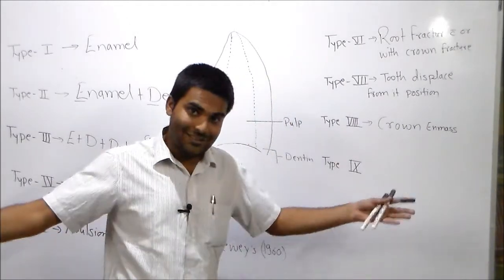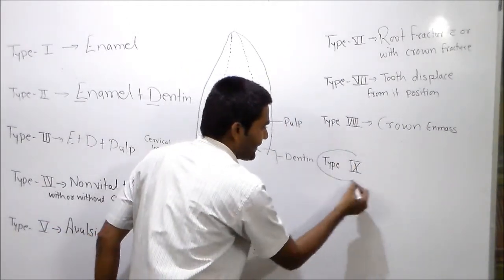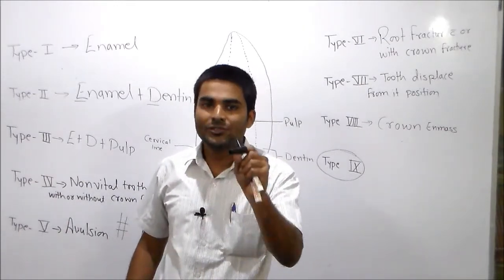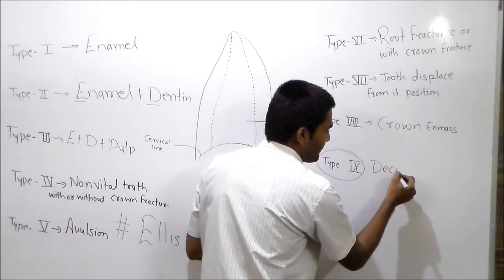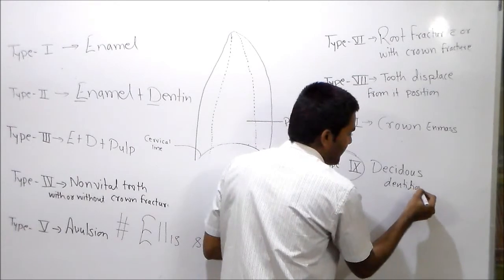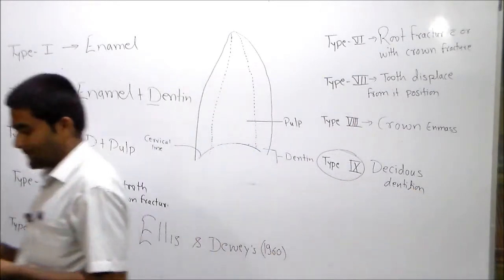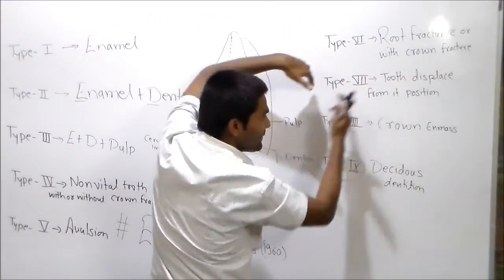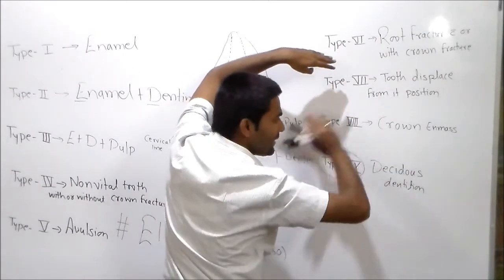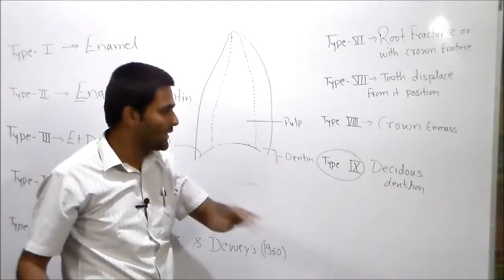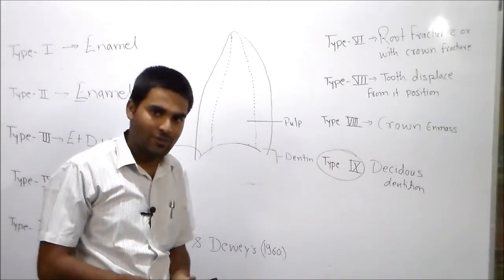And the last, that is type 9, fracture in primary, that is deciduous dentition. Fracture in deciduous dentition. So my dear friends, this is type 9.